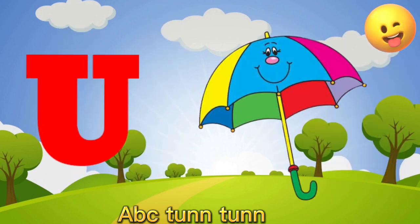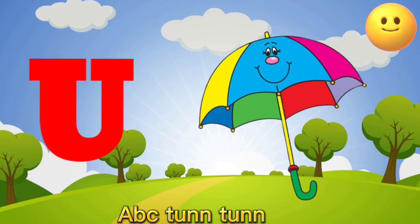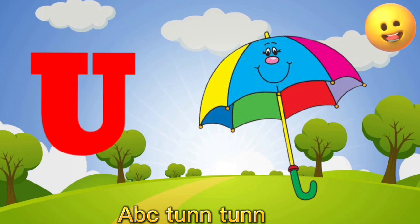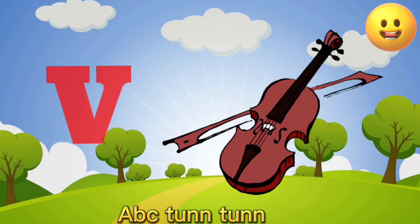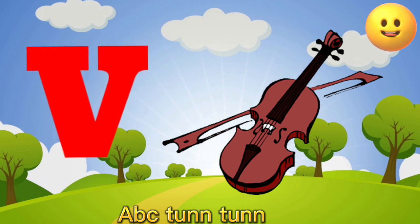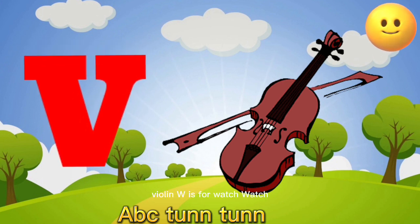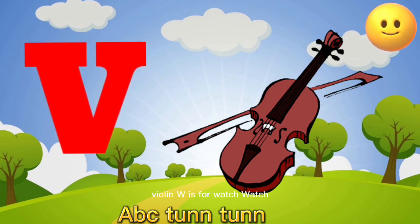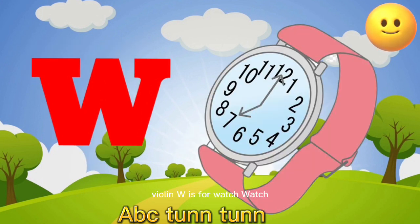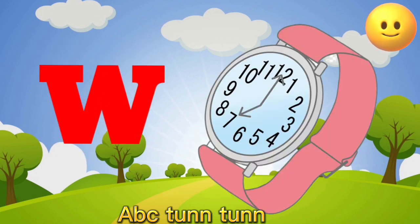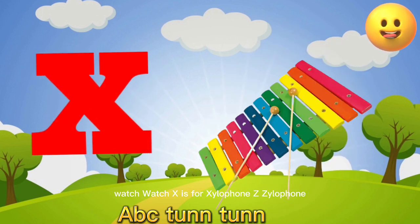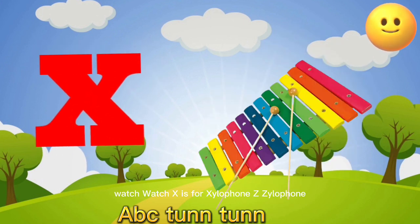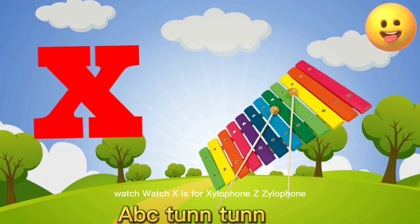U is for umbrella, u-u-umbrella. V is for violin, v-v-violin. W is for watch, w-w-watch. X is for xylophone, x-x-xylophone.